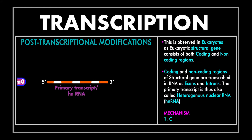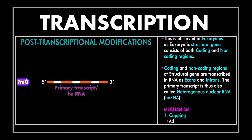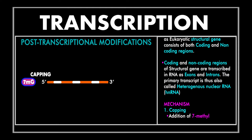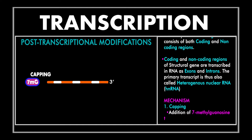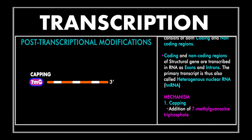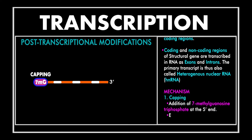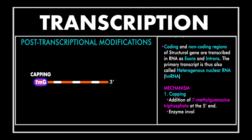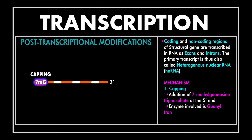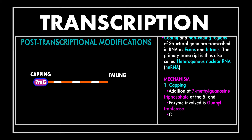Let's see what changes occur in the primary transcript before it moves into the cytoplasm for translation. The first step is the addition of a seven-methyl guanosine triphosphate to the five prime end of the primary transcript. This process is called capping and is performed by the enzyme guanylyl transferase. The five prime cap is important as it helps the smaller subunit of ribosomes recognize the transcript at the time of translation.